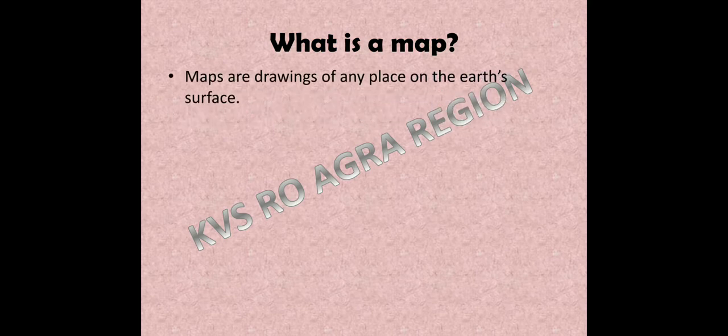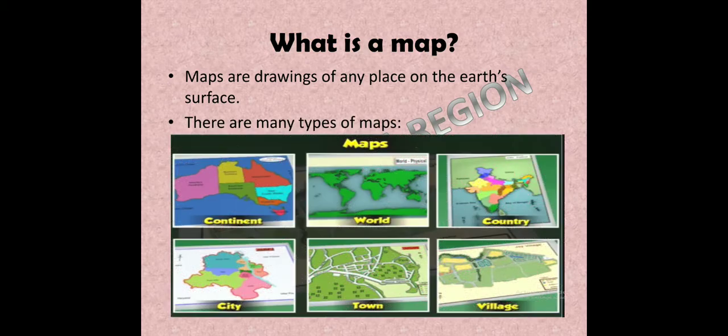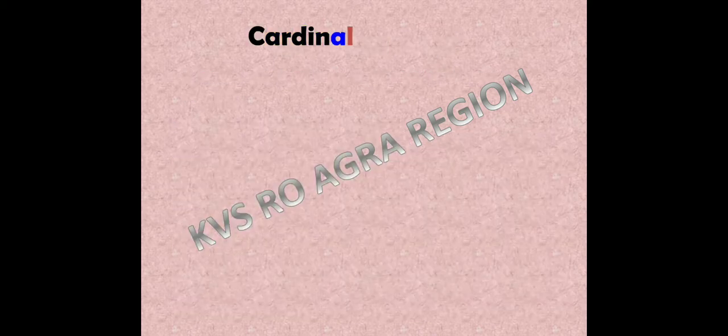So what is a map? Maps are drawings of any place on the earth's surface. There are many types of maps: maps of continents, world map, map of a country, a city map, and maps of towns and villages.